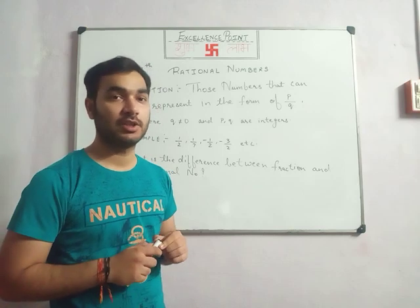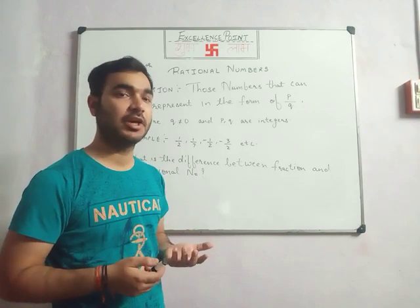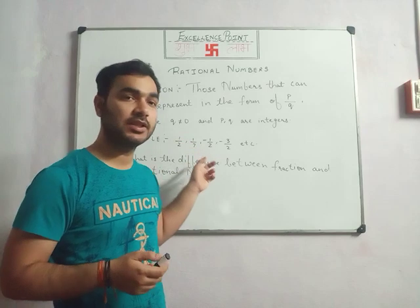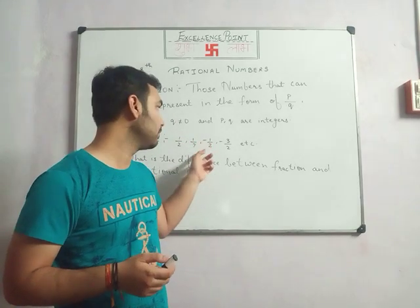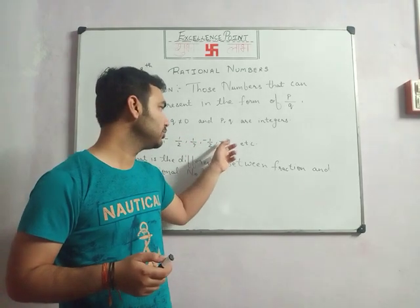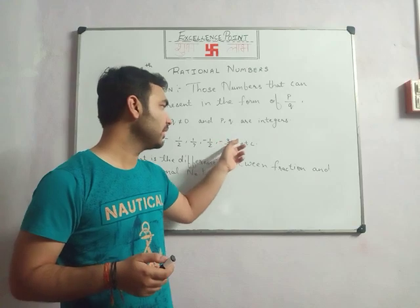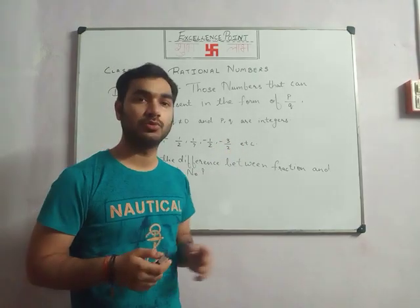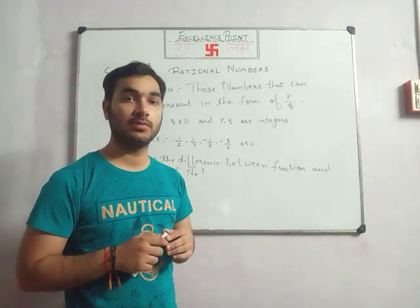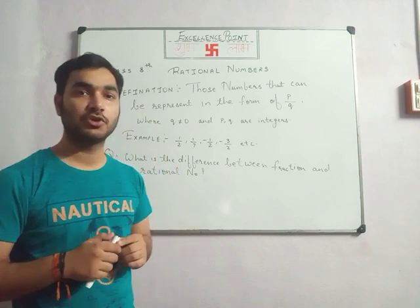These are called rational numbers. For example, 1 upon 7, 1 by 2, minus 1 by 2, and minus 3 by 2 — all are rational numbers. Now, the first question which commonly arises is: what is the difference between a fraction and a rational number?